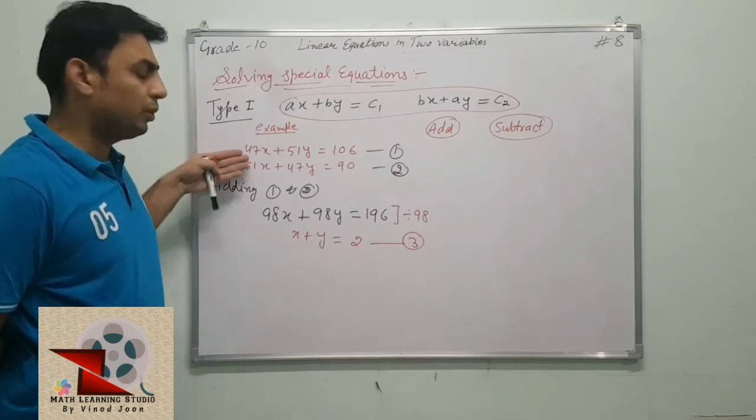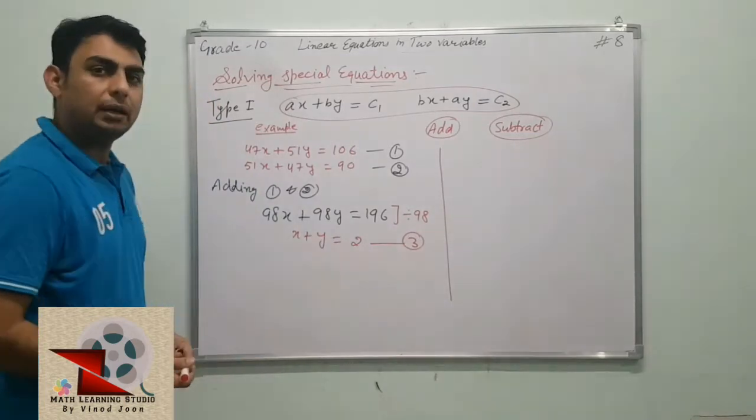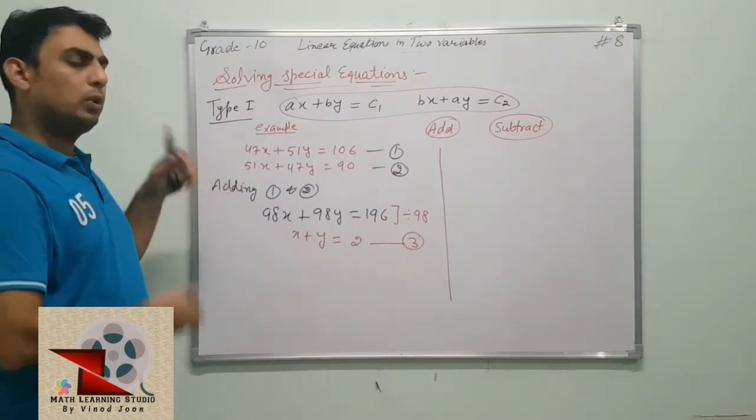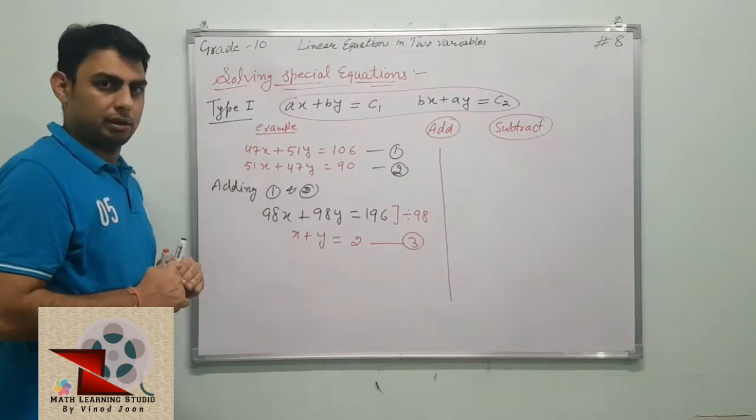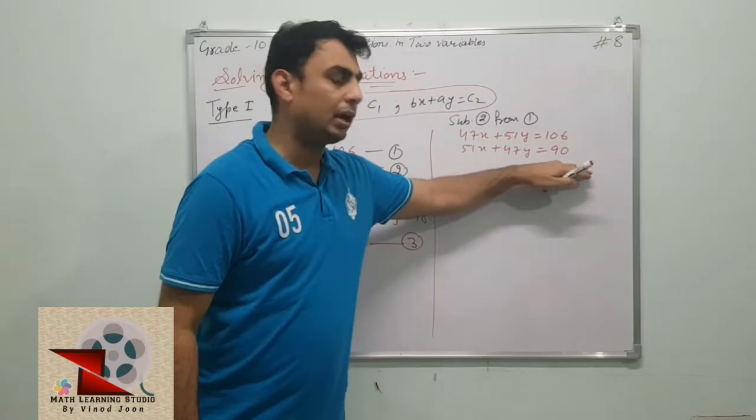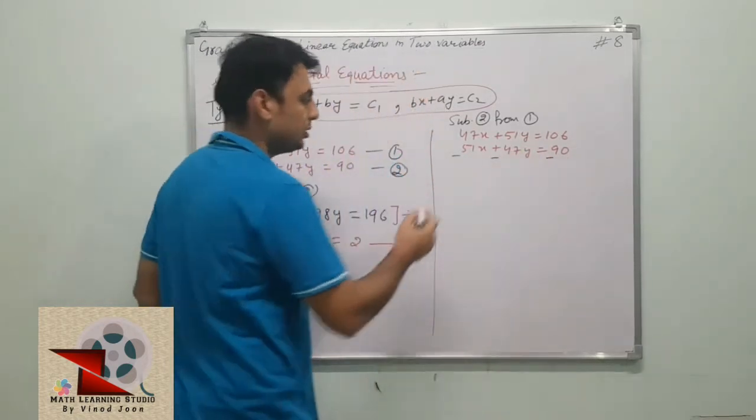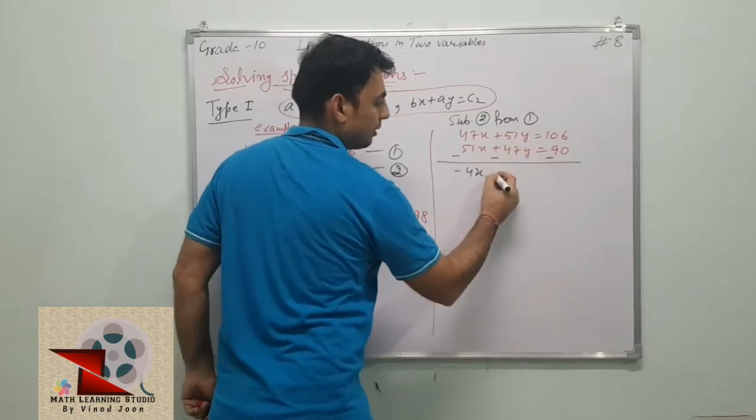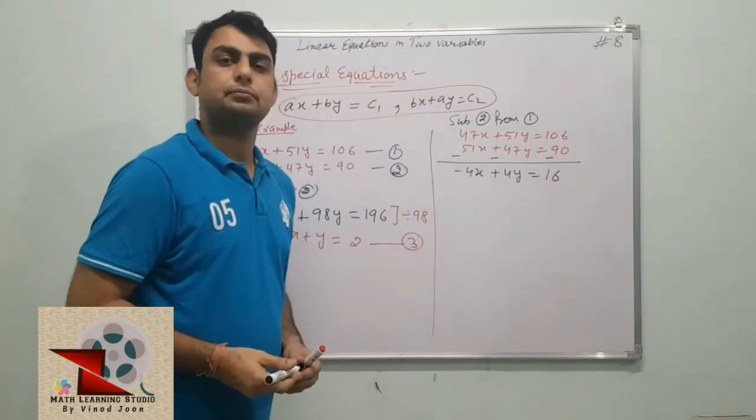What I explained is that we added both equations to obtain a third equation which is very simple. Now should we add or subtract? We will subtract. Let's subtract equation 2 from 1, or 1 from 2. The choice doesn't matter. We'll subtract equation 2. So subtracting equation 2, I change the signs and subtract. 47 minus 51, what remains? Minus 4x. 51 minus 47, what remains? Plus 4y. Equal to 106 minus 90, what remains? 16.